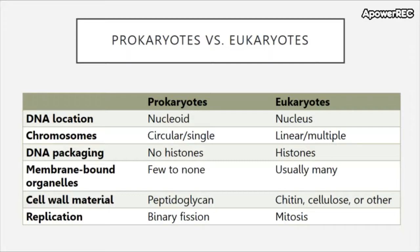Their chromosomes vary as well. Prokaryotes have circular genomes and tend to be a single copy, whereas eukaryotes have linear chromosomes and they tend to be multiple. Prokaryotes also do not have histones while eukaryotes do. Histones are proteins that are used to pack the genetic information tightly. Membrane-bound organelles are not found in prokaryotes, or if there are, there are just a few of them, whereas eukaryotes have an assortment of them.